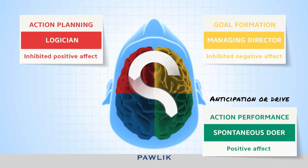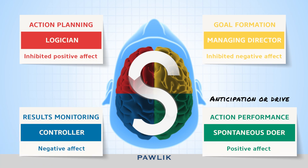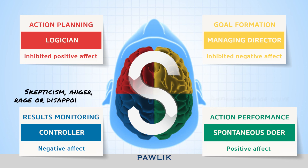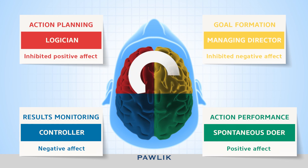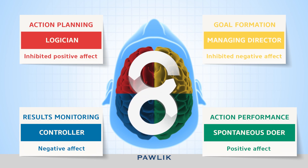If we encounter unforeseen difficulties in our efforts to implement our plans, the controller comes into play. The anticipation and drive that we felt during action facilitation turn into skepticism, anger, rage, or disappointment — the negative effect. This negative effect causes us to focus on errors or examine results. Once we have recognized the error, we need to free ourselves from this problem focus and return to a solution-oriented mindset by inhibiting our state of negative effect accordingly. The managing director is activated again and the figure eight starts from the beginning. Effects are therefore like switches that can turn different cognitive systems on and off.